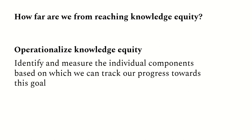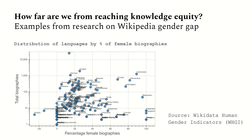One way to do this is to do what we call operationalised knowledge equity. This means to isolate and identify the individual components and gaps which prevent us from reaching knowledge equity and find a way to measure those gaps. By doing so, we can track our progress towards the end goal of knowledge equity. To understand this concept better, let me give you an example from one of the most well-studied gaps in Wikimedia projects.